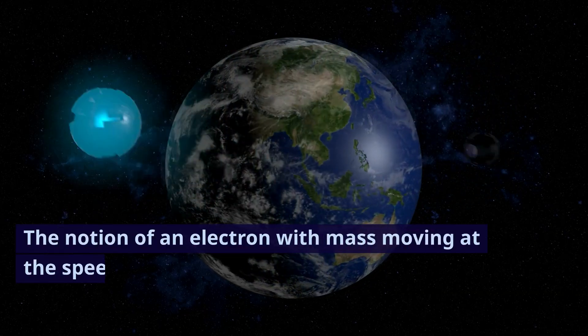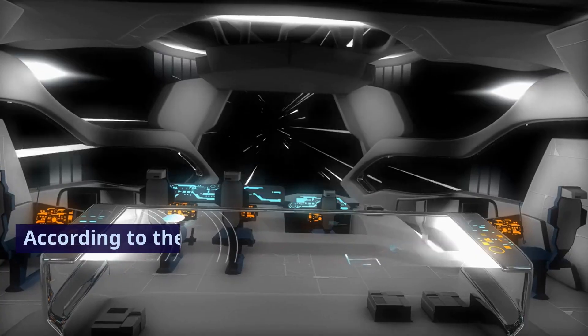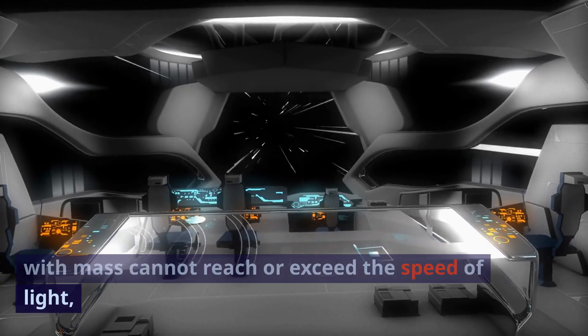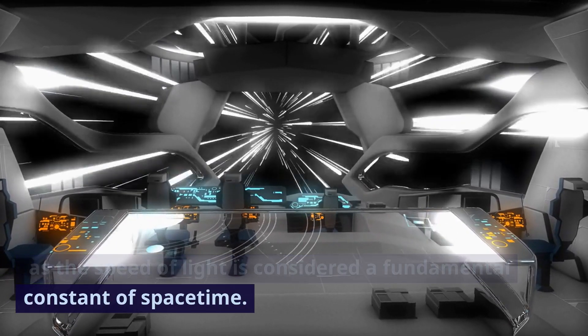Yes, you are correct. The notion of an electron with mass moving at the speed of light contradicts the theory of relativity. According to the theory of relativity, any particle with mass cannot reach or exceed the speed of light, as the speed of light is considered a fundamental constant of spacetime.